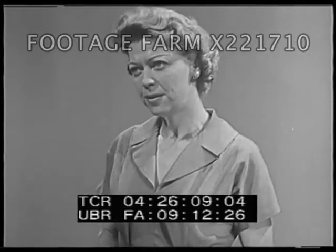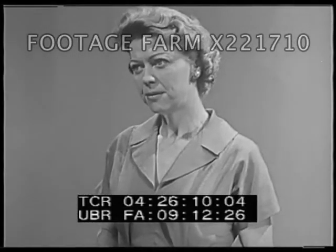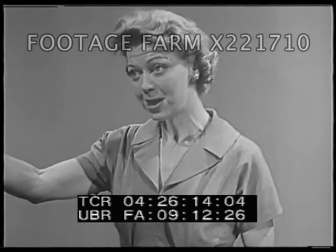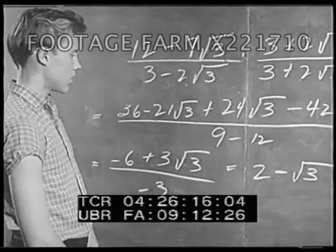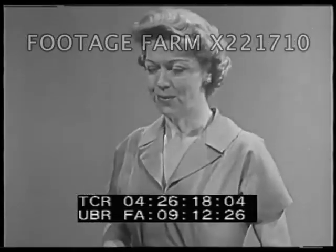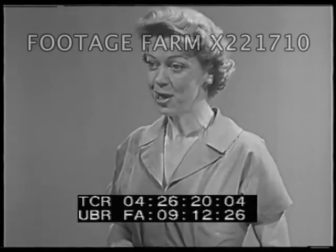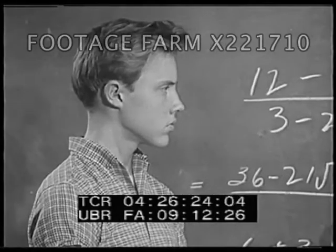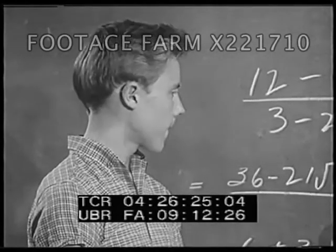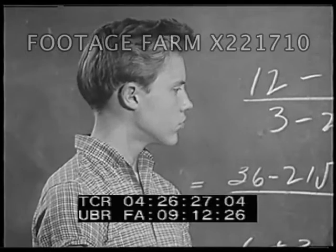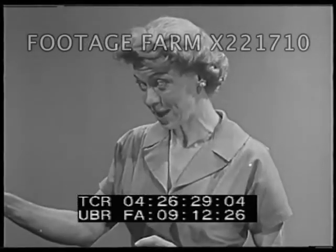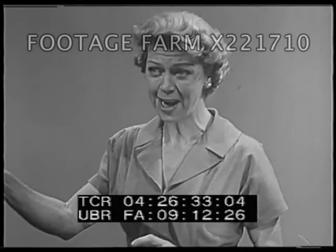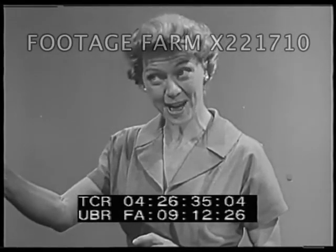Well, then what's the trouble, Tom? I don't see what's bothering you. But why do I do this, Ms. Perkins? To get the radical, the square root of 3, out of the denominator. Well, it's considered good mathematical form not to leave a radical in the denominator. Besides, it's a lot easier to compute a decimal approximation for your final answer there than to do all that multiplying and dividing you have to do in the original fraction.